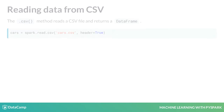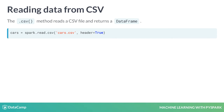Our session object has a read attribute, which in turn has a CSV method, which reads data from a CSV file and returns a DataFrame. The CSV method has one mandatory argument: the path to the CSV file. There are a number of optional arguments — we'll take a quick look at some of the most important ones.